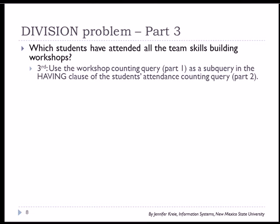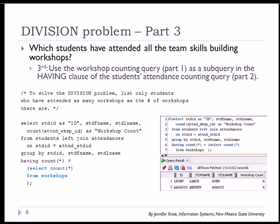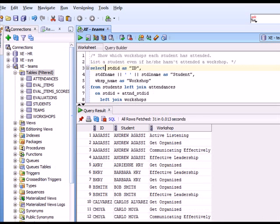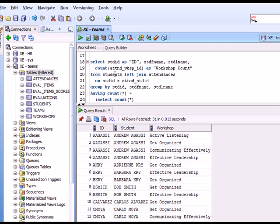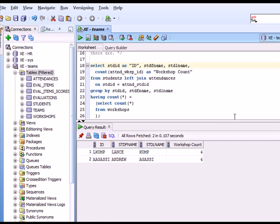So which students have attended all the team skills building workshops? We're going to add a subquery and use it in the having clause. That takes the count of workshops and evaluates it against the other query that gives us the number of workshops each student has attended. And we come up with Lance Comp and Andrew Agassi because they have a count of four. So they come through the evaluation where having count of the number of workshops for a student is equal to the number of workshops offered. So that's your solution. I can switch back over to SQL developer, scroll down to that code and run that solution. And we see that they come through the two students that have attended four workshops.